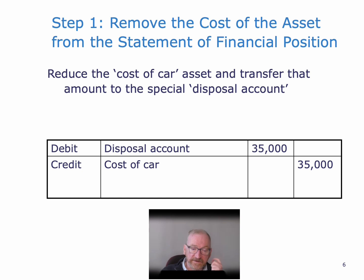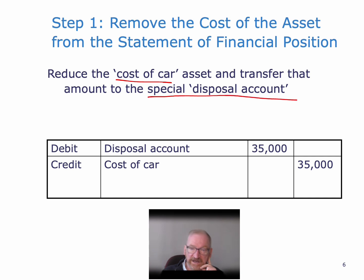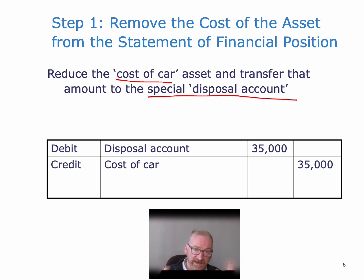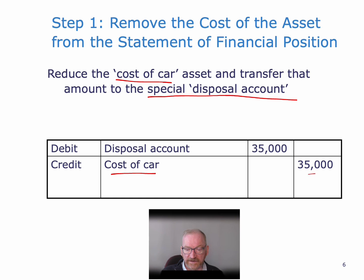Our first entry is to reduce the cost of car assets and transfer that amount to a special disposal account that we set up for this purpose. The special disposal account will gather together all the things that have to do with the disposal of this asset. So we debit the disposal account and we credit the cost of car $35,000.